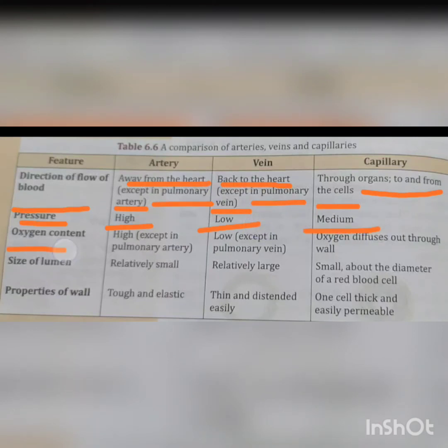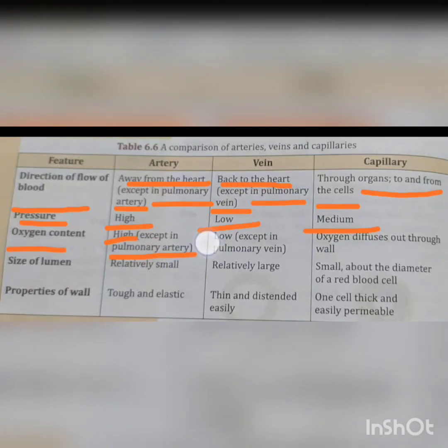Regarding oxygen content: in arteries, the oxygen content is high except in the pulmonary artery. In veins, the oxygen content is low except in the pulmonary vein. And in capillaries, oxygen diffuses out through the wall.